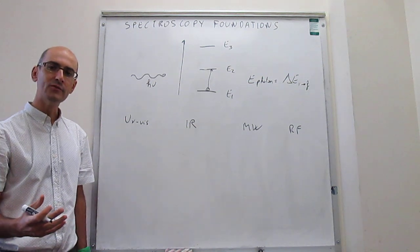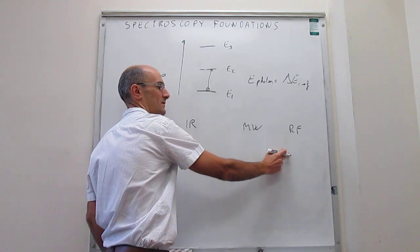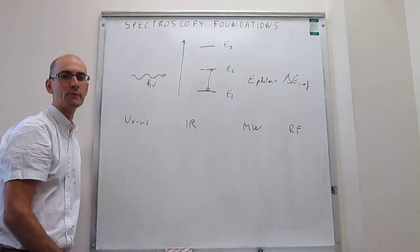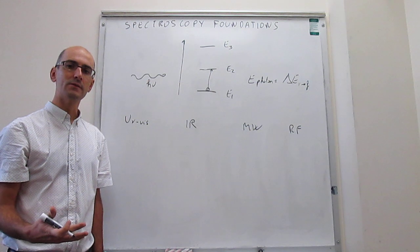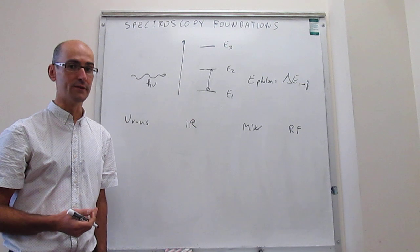Now, of course, the energy is very different. So the energy of a UV-Vis photon is about a million times lower than the energy of a radio frequency photon. So it's pretty obvious that the type of energy levels that you're going to be engaging with these photons are very different.